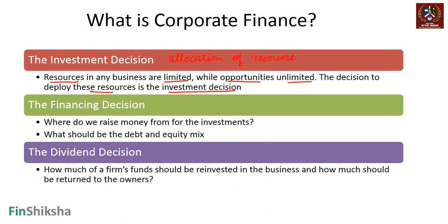The next question is: where do we raise money from for all these investments? These resources include cash, so how do we raise the money, and what should be the optimal debt and equity mix? The mix of debt and equity, at the optimal level that maximizes the objective function in corporate finance, falls under the purview of the financing decision.